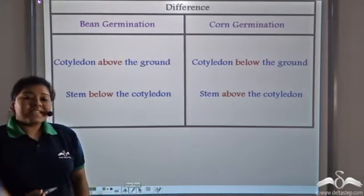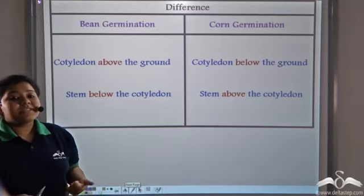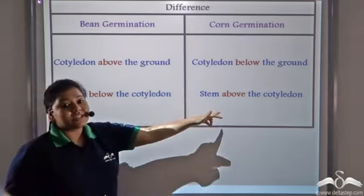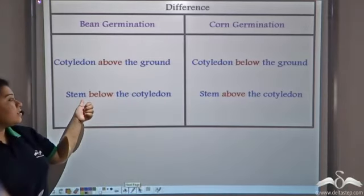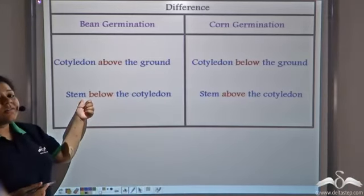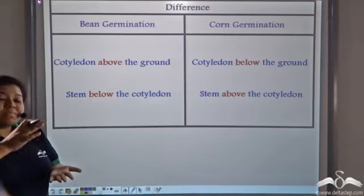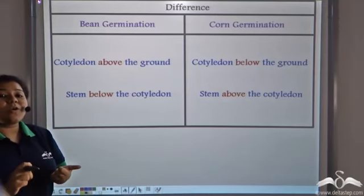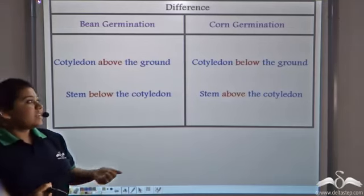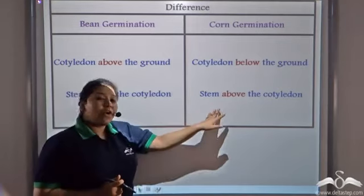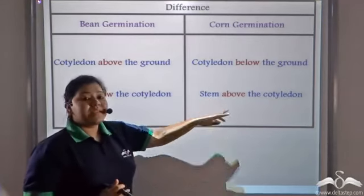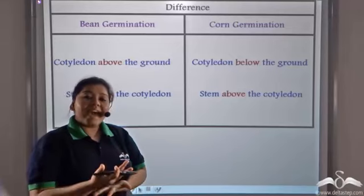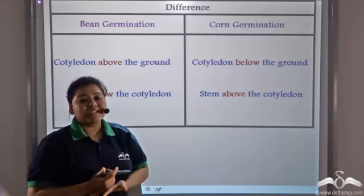So this is the second difference between bean germination and corn germination. In bean germination, the shoot or stem remains below the cotyledon — hence it is hypocotyl germination — and in case of corn, the stem remains above the cotyledon, that is epicotyl germination.